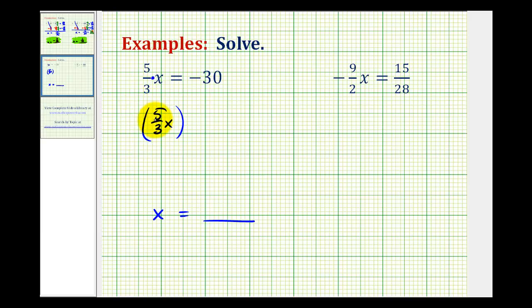So multiply the left side of the equation by three-fifths, and then we'll do the same to the right side. But because we're multiplying by a fraction, we'll write negative 30 as negative 30 over one.